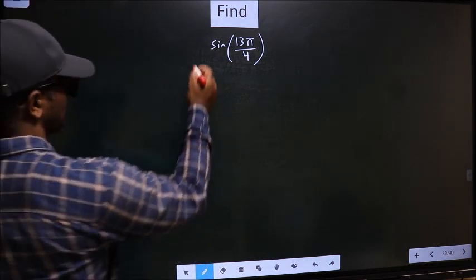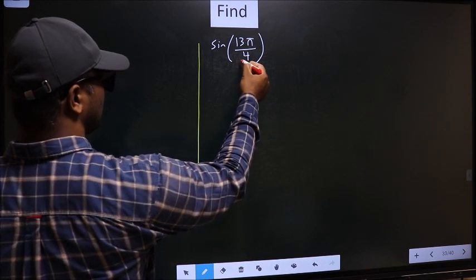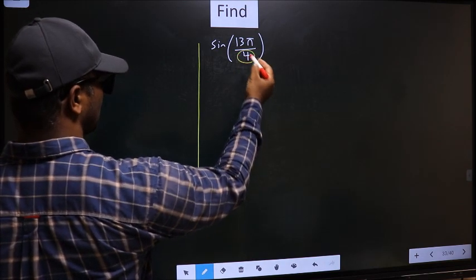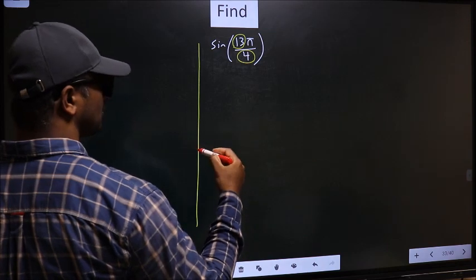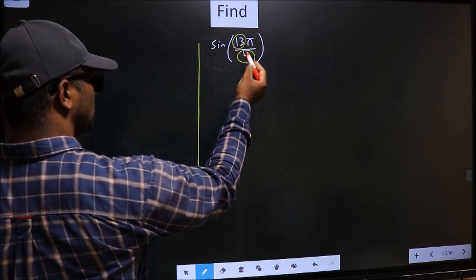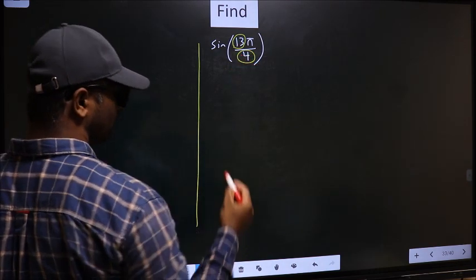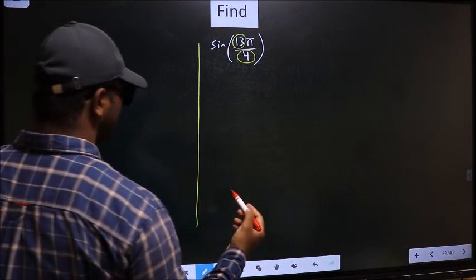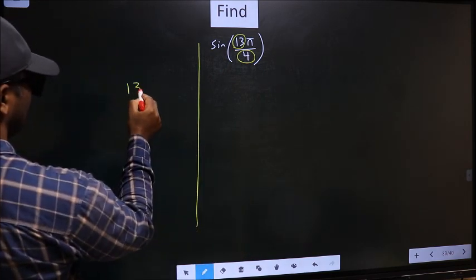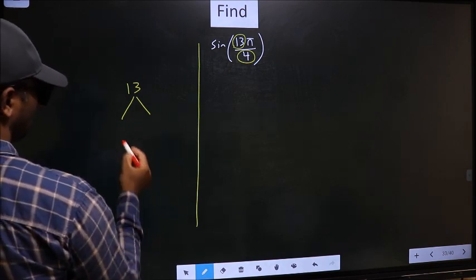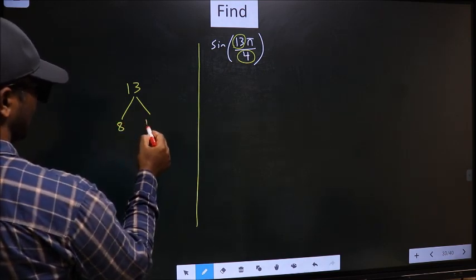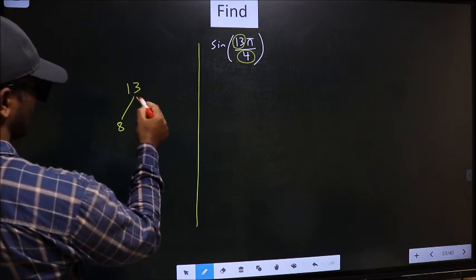In the denominator we have 4, in the numerator 13. Now you should look—13 is close to which multiple of 4? What I mean is, 13, and here you write multiples of 4: that is 8 and 12 or even 16.